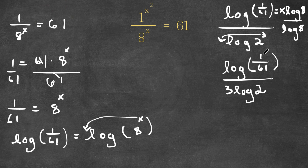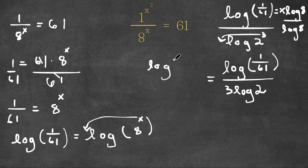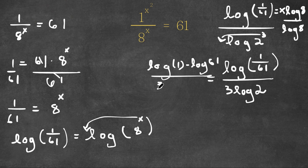And if we're taking the log of a fraction, the log of a fraction can actually be the log of the numerator minus the log of the denominator. So this is equal to log 1 minus log 61, all over 3 log 2.